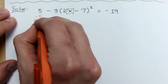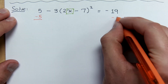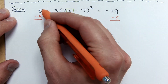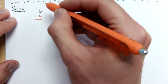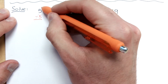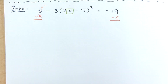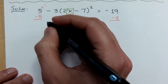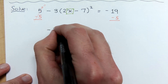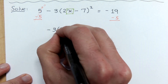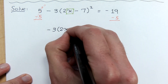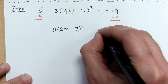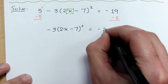We subtract 5 on both sides because we're trying to get things to cancel out. So what's 5 minus 5? That reduces to give us 0. And so now we have negative 3 times the quantity 2X minus 7 squared is equal to negative 24.